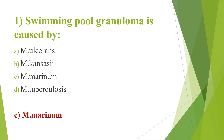Mycobacterium ulcerans causes Buruli ulcer. Mycobacterium kansasii and Mycobacterium marinum are photochromogens that are slow growing and produce a yellow-orange pigment when exposed to light. Mycobacterium kansasii causes chronic pulmonary infection. Mycobacterium tuberculosis is a typical Mycobacterium which causes tuberculosis.